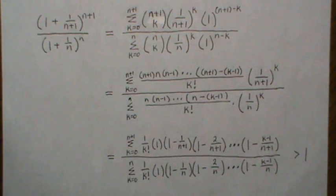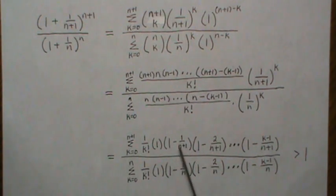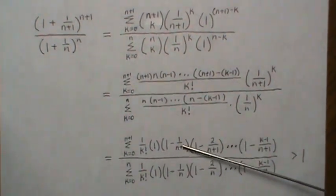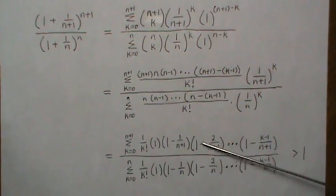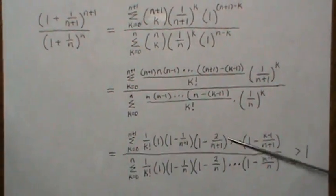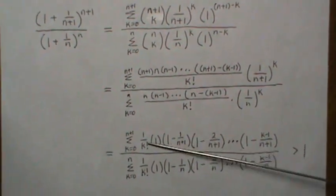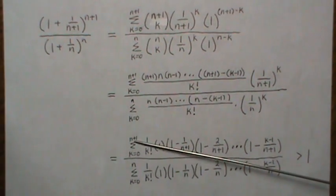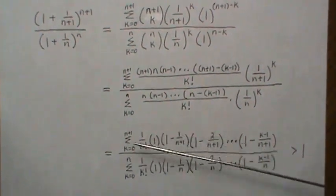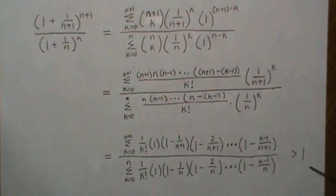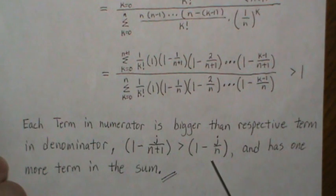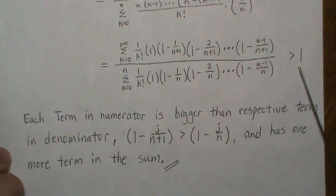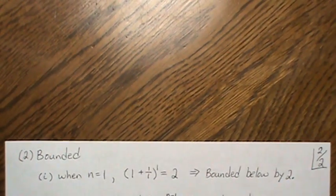Here's the key point: each corresponding term in the numerator is bigger than its counterpart in the denominator, because we're subtracting off a little bit less each time. So every one of the corresponding numerator terms is greater than or equal to its denominator term. Furthermore, going to n+1 adds one extra positive term, which ensures the ratio is strictly greater than 1. Therefore the sequence is increasing.